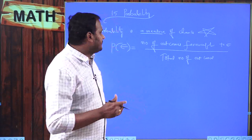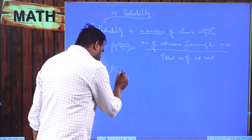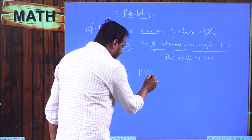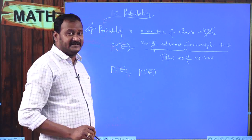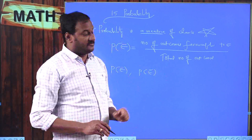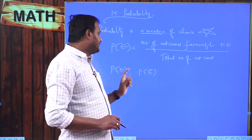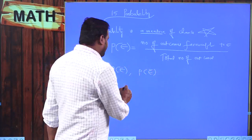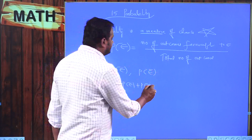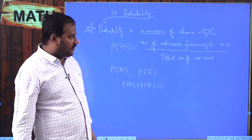Here we understand that P(E) is probability of getting an event, and P(E complement) is the probability of not getting that event. When you observe that probability of getting an event and probability of not getting an event is always equal to 1.